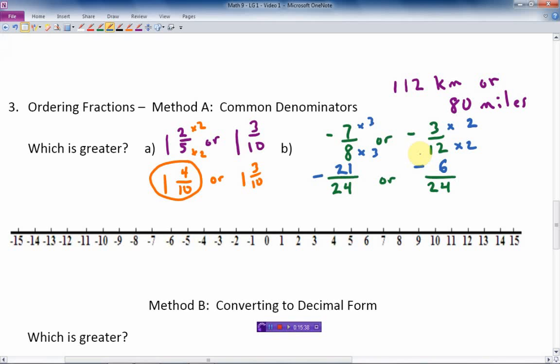So which is bigger? Well, where would they come on the number line? Negative 21 over 24 is almost the same as negative 1. It would be right close to negative 1. Negative 6 over 24 is much closer to 0. So which one is the larger? Well, the one to the right. Therefore, negative 6 over 24 is the larger number. Don't get fooled by the negative sign there. Make sure you always choose the one to the right.